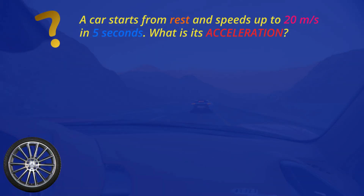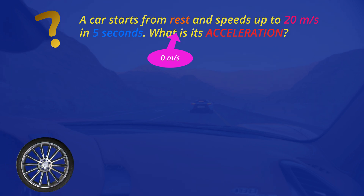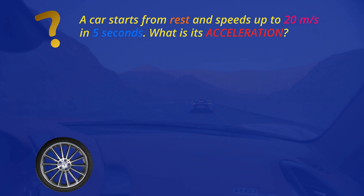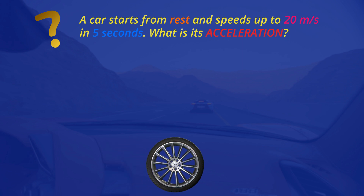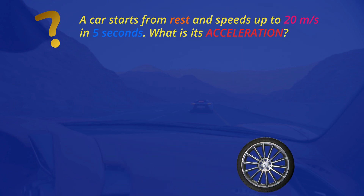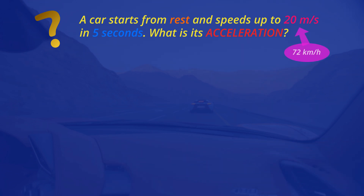In our first example a car starts from rest. This means that the car is not moving, so its initial velocity, or the first speed of the car, is zero. It speeds up to 20 metres per second — that means that its final speed is 20 metres per second, or about 72 kilometres per hour. It speeds up in five seconds. What is its acceleration?